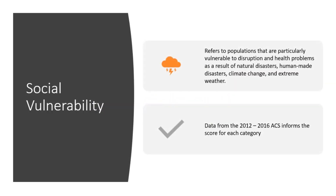Social vulnerability refers to populations that are particularly vulnerable to disruption and health problems. The Social Vulnerability Index ranks 15 different social factors, including poverty, lack of vehicle access, and crowded housing.